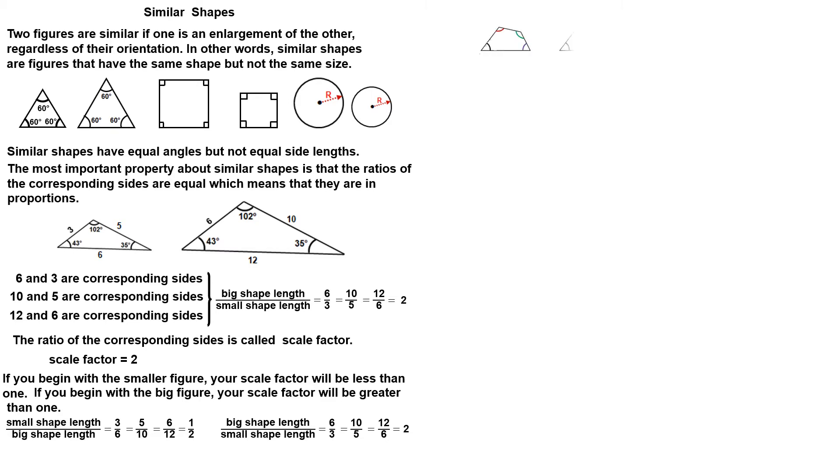In short, two shapes are similar if the angles are the same size and the corresponding sides are in the same ratio. Let K be the scale factor. Let's see how it works.